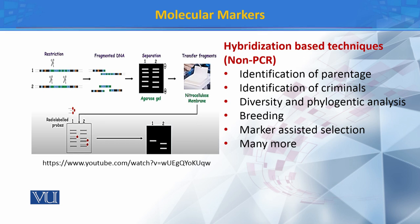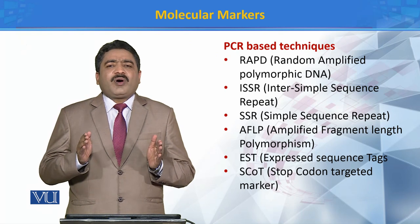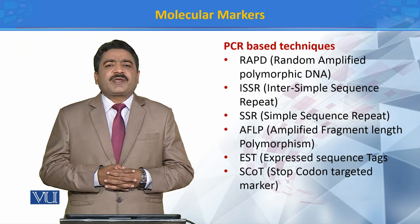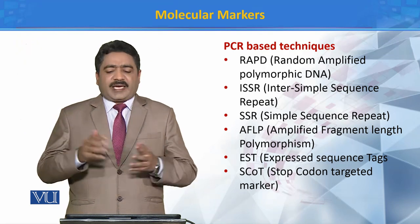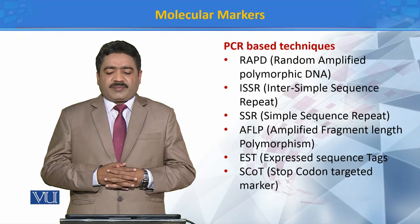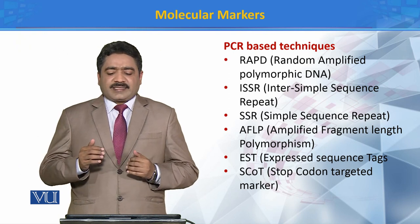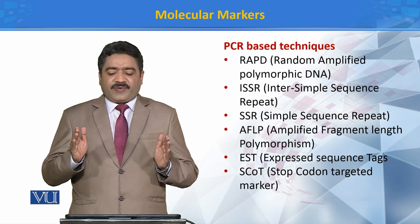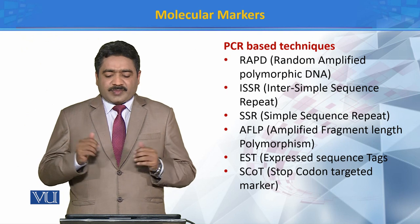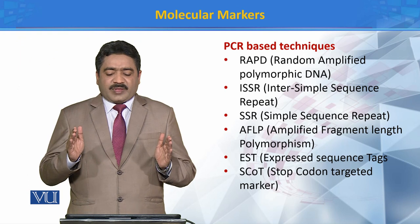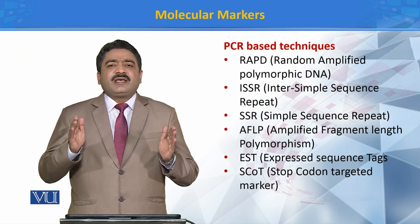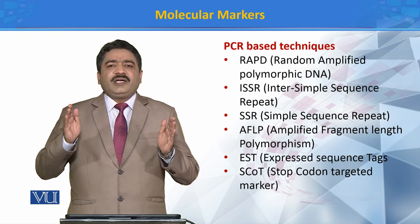اسی طریقے سے PCR based molecular markers کا استعمال کر کے بھی ہم organisms کو compare کر سکتے ہیں اور یہ پتا چلا سکتے ہیں کہ یہ closely related ہیں یا distantly related۔ Different PCR based techniques میں شامل ہیں: (1) RAPD — Random Amplified Polymorphic DNA، (2) ISSR — Inter Simple Sequence Repeat، (3) SSR — Simple Sequence Repeat، (4) AFLP — Amplified Fragment Length Polymorphism، (5) EST — Expressed Sequence Tags، اور (6) SCOT — Stop Codon Targeted marker۔